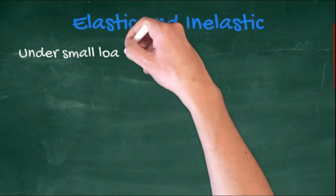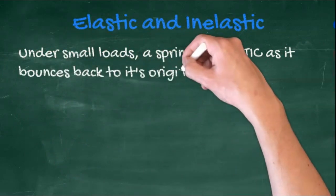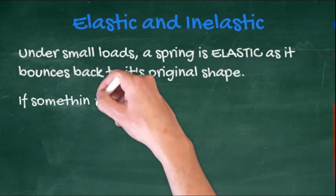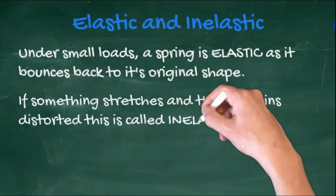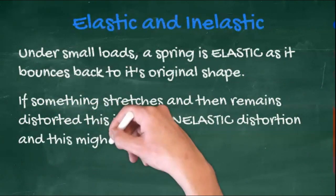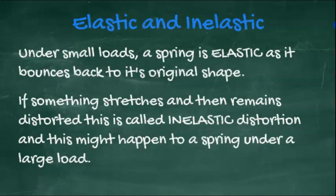Under small loads, a spring is elastic, as it bounces back to its original shape. If something stretches and then remains distorted, this is called inelastic distortion. And this could happen to a spring under a very large load, for example.